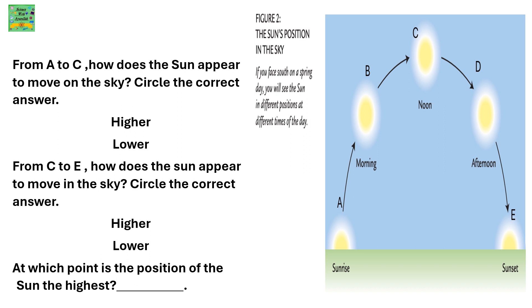From A to C, how does the sun appear to move in the sky? Circle the correct answer. Higher? Lower?